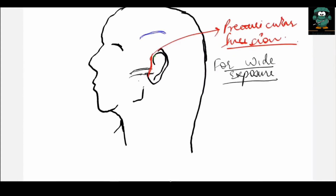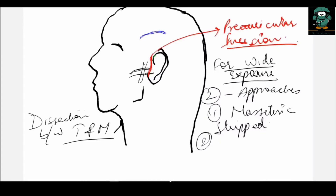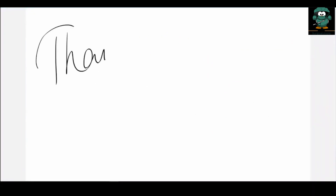The first approach is to strip the masseter muscle from the lateral surface of the ramus upwards, exposing the entire TMJ and condylar region. Care should be taken to avoid the masseteric artery and nerve passing through the sigmoid notch. The second approach is to osteotomize the zygomatic arch, pedicle the masseter muscle on that arch, and dissect between the temporalis and masseter muscles, stripping them from the lateral surface of the ramus to expose the area. That's it for today, thank you for watching.